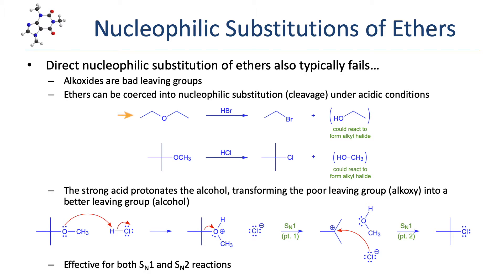In the first example, we have a symmetric ether reacting with HBr, and you can see that it forms an alkyl halide and an alcohol. The alcohol may or may not be isolated in the final product mix. And that's because, as we just saw, alcohols are reactive with the strong halogen acids. So in this case, the alcohol product could react further with HBr to form another molecule of bromoethane.